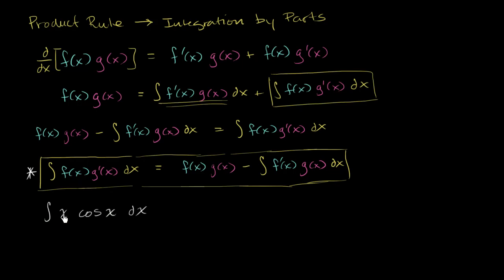And the question is, do I assign f of x to x and g prime of x to cosine of x, or the other way around? Do I make f of x cosine of x and g prime of x equal to x? The thing to realize is to look at the other part of the formula and realize that you're essentially going to have to solve this right over here. And here we have the derivative of f of x times g of x. So what you want to do is assign f of x so that the derivative of f of x is actually simpler than f of x, and assign g prime of x that if you were to take its antiderivative, it doesn't really become any more complicated.